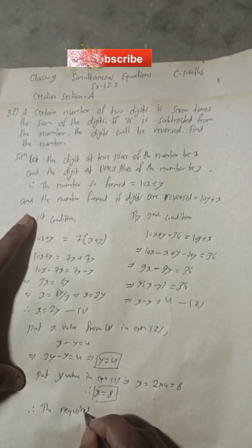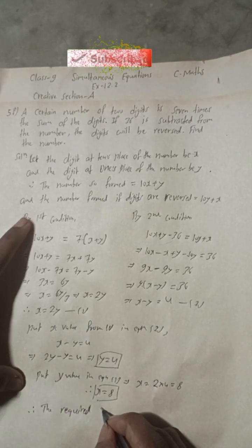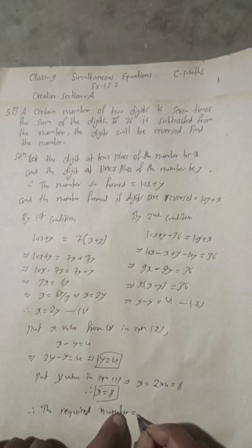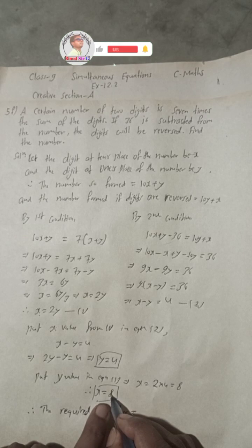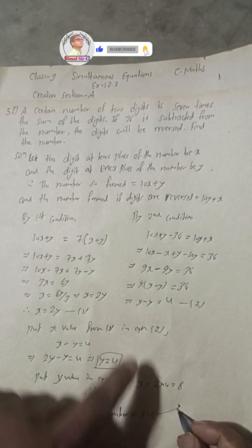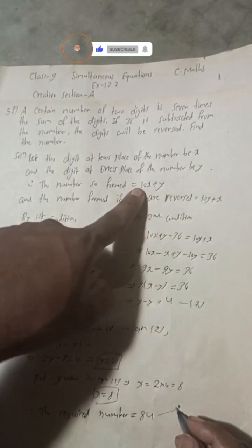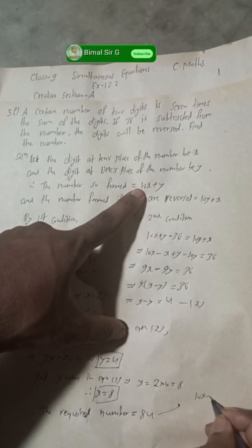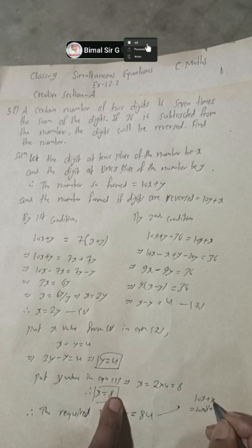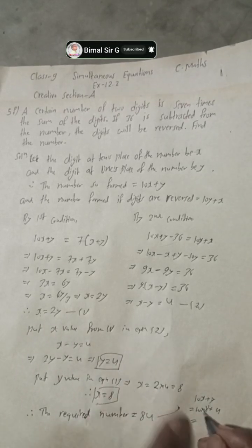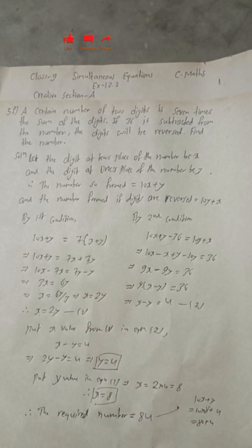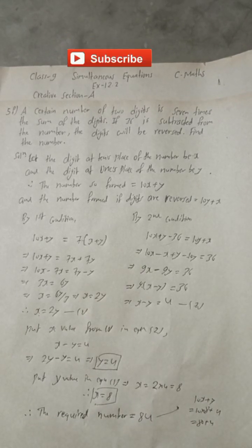Therefore, the required two-digit number equals 10x + y = 10(8) + 4 = 80 + 4 = 84. So 84 is the required solution.